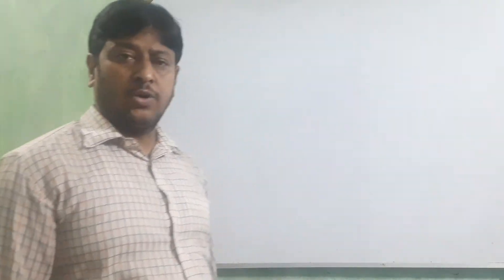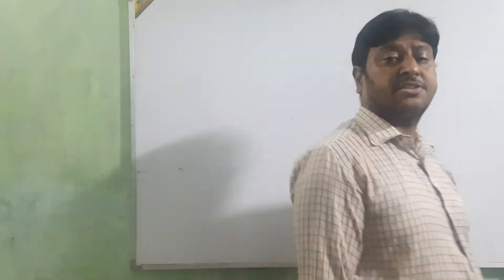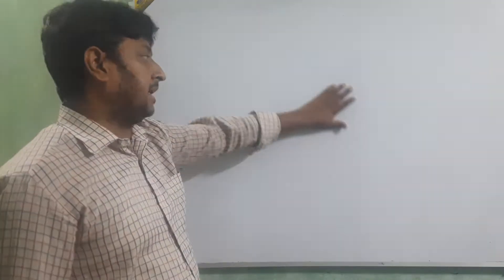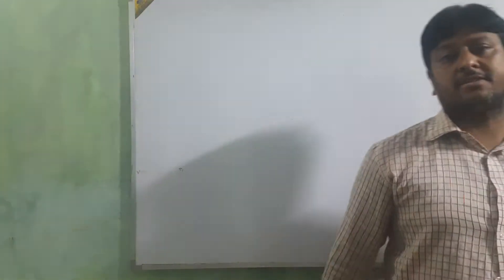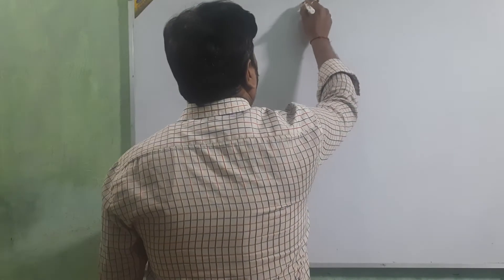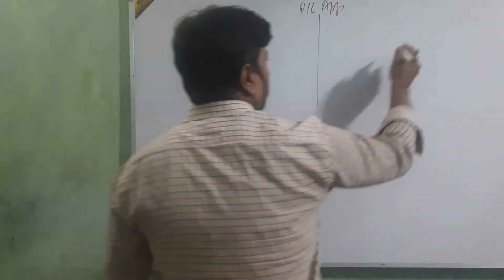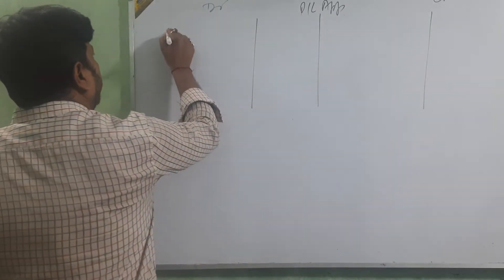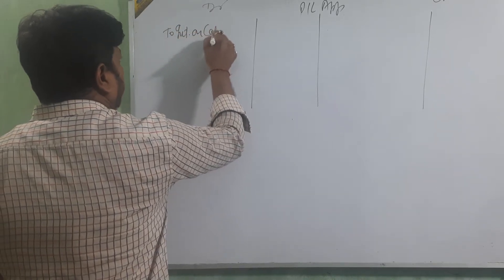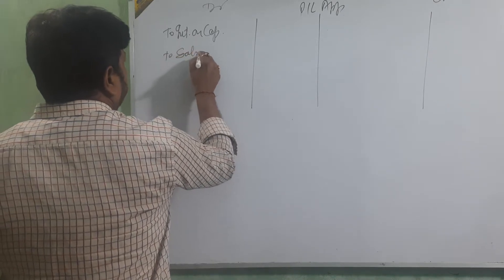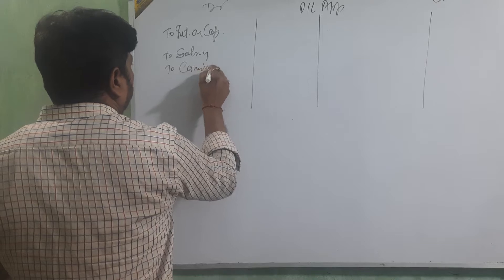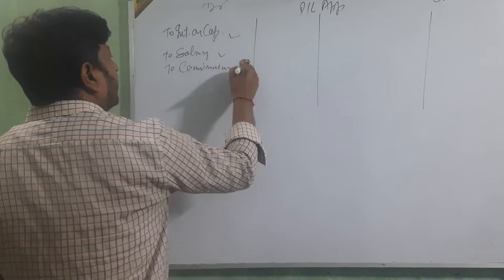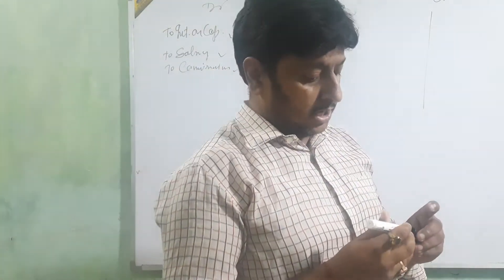Good morning students. Today I am going to start the next topic. As I started in class, I was telling about the P&L appropriation account. Today I am going to explain the capital account. Before starting the capital account, let me explain again how we are going to make the P&L appropriation account. The P&L appropriation account has two sides: the debit side and the credit side.